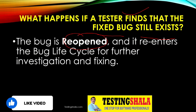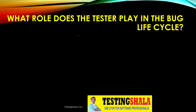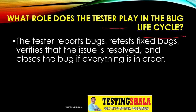What role does a tester play in the bug life cycle? The tester reports a bug or defect, performs a retest once the bug has been fixed, verifies that the issue is resolved, and closes the bug if everything is in order. That is the overall role of the tester during the bug life cycle.